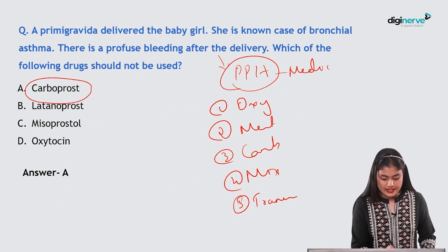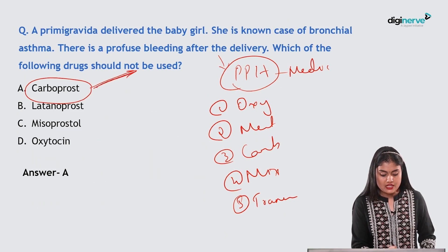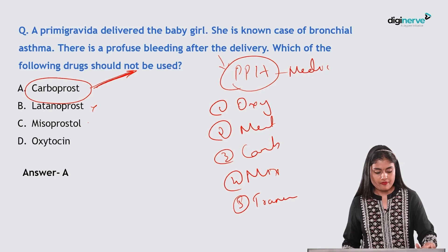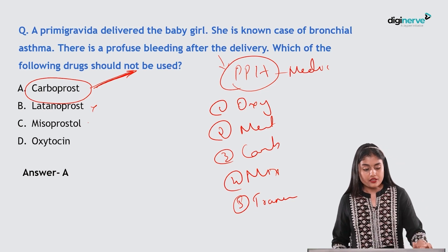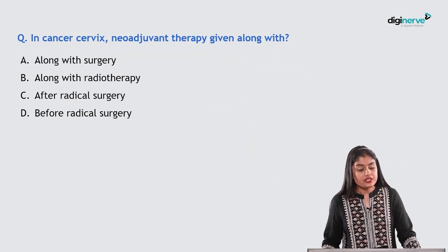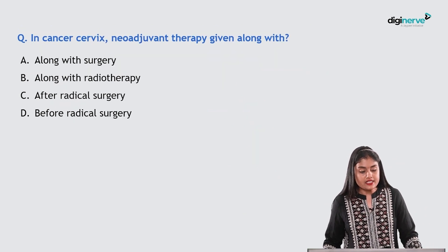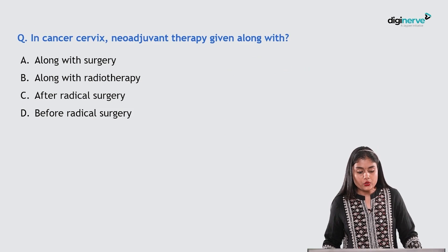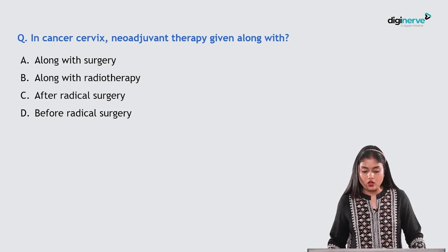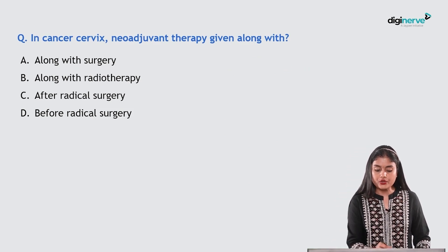In this case of a bronchial asthma patient, carboprost is contraindicated and should not be given. The correct answer is carboprost.